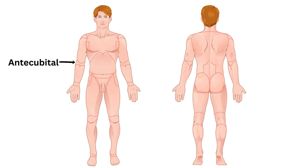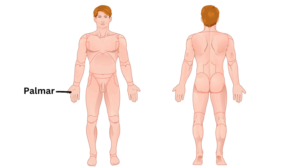8. Antecubital — the region in front of the elbow. 9. Carpal — the wrist area. 10. Palmar — the palm region. 11. Digital — the fingers or toes.